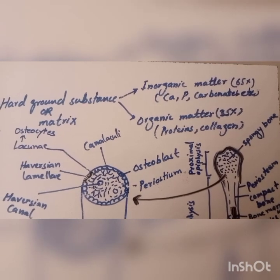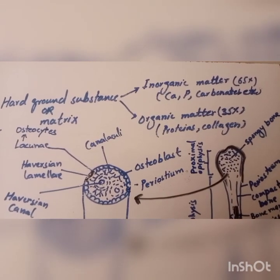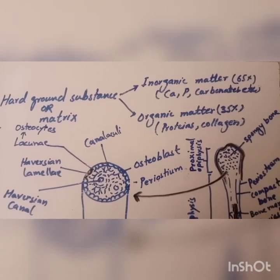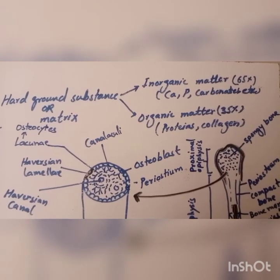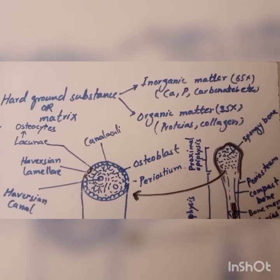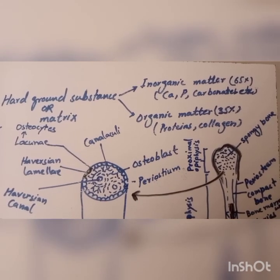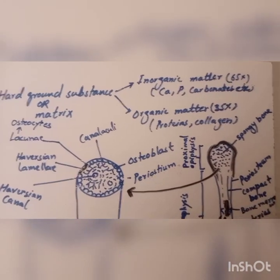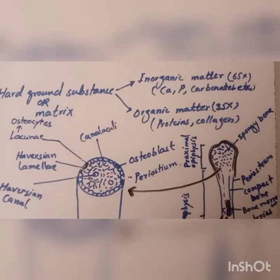Bone is a rigid form of connective tissue which forms the endoskeleton of vertebrates. Bone is a living hard and strong structure. It consists of a hard ground substance or matrix and cells.